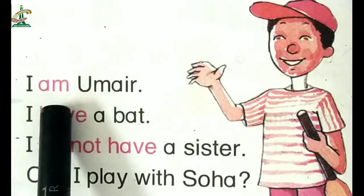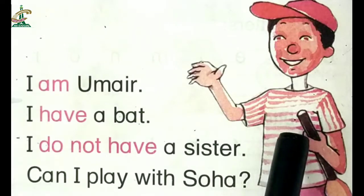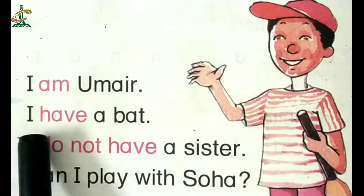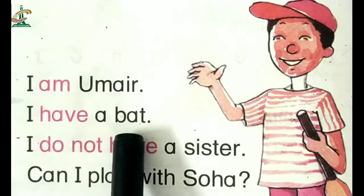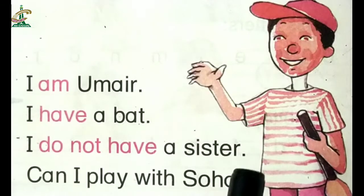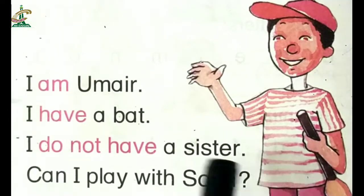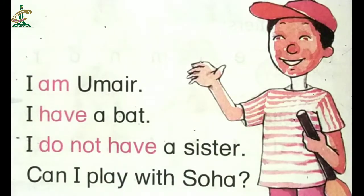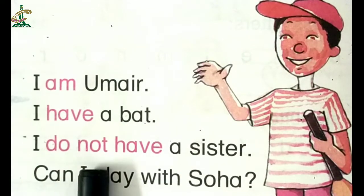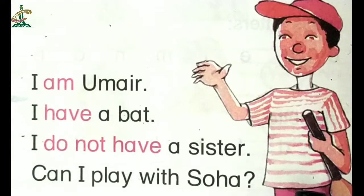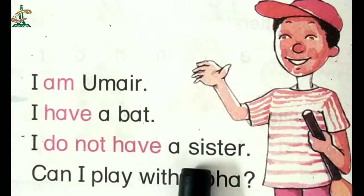I am Umair. یہ کیا کہہ رہی ہیں؟ I am Umair. I have a bat. ان کے ہاتھ میں ایک بیٹ ہے۔ یہ کہہ رہے ہیں: میرے پاس ایک بیٹ ہے۔ I have a bat. I do not have a sister. یہ کہہ رہے ہیں میرے پاس sister نہیں ہے۔ I do not have a sister.